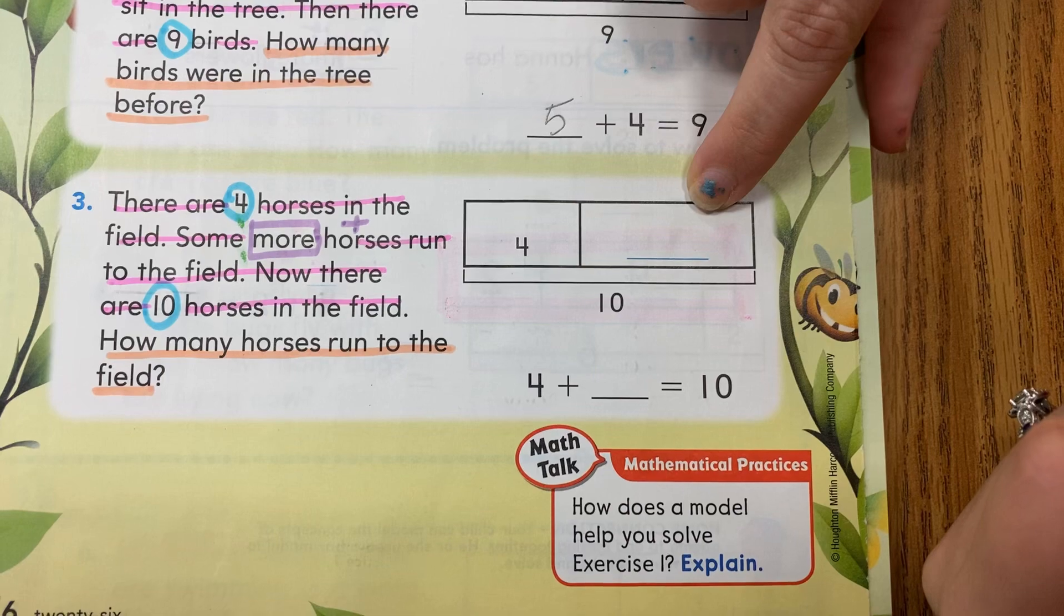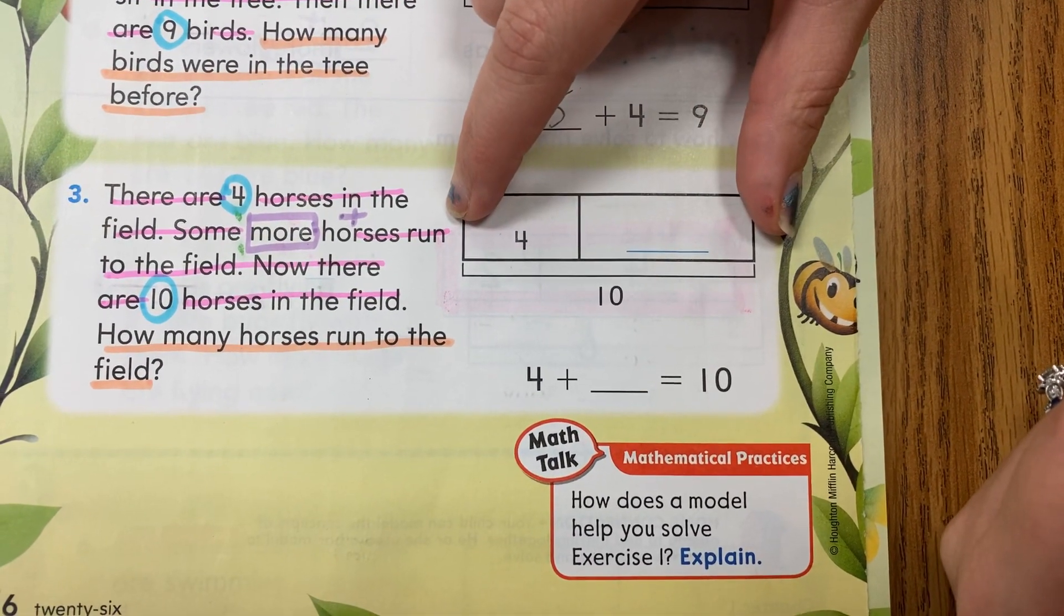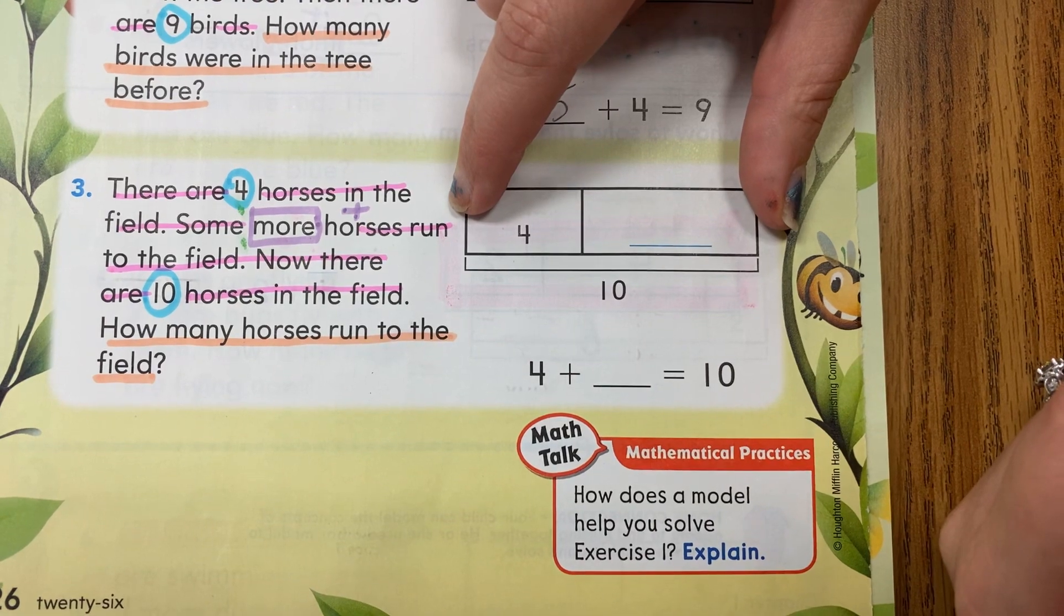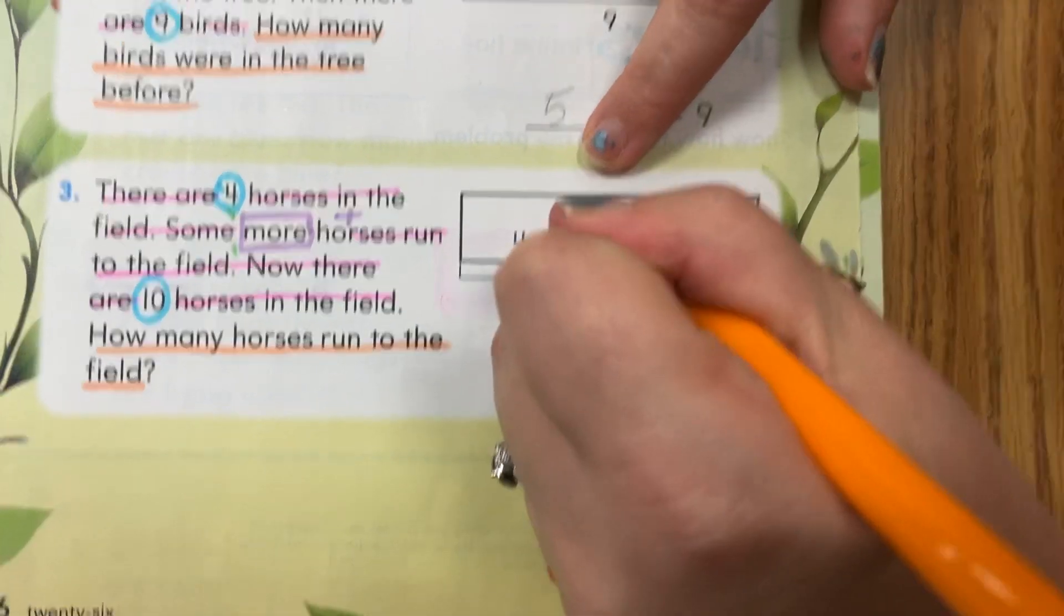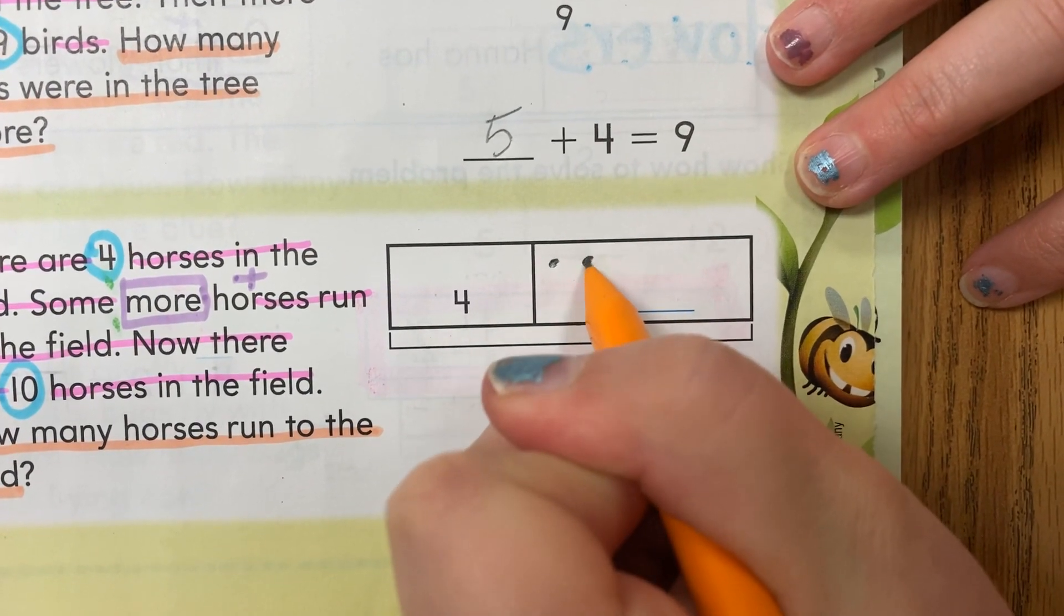Pencils up, and we're going to be creating our dots up here in our bar model to keep going. We're going to start with four, and then we're going to go five. Five, six.